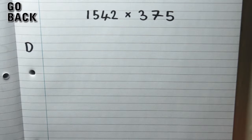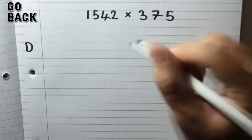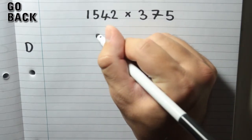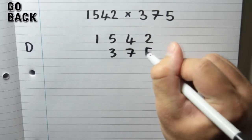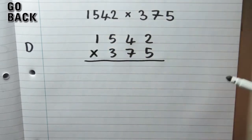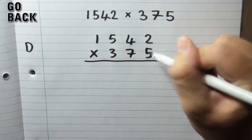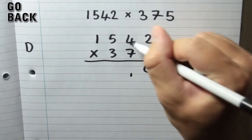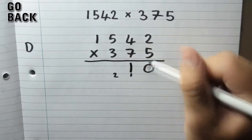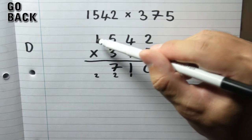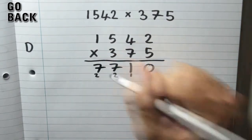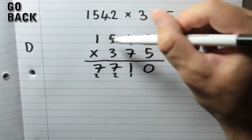Part D is long multiplication again, but this time you've got 4 digits in one number and 3 digits in the other. I'll use the column method. So I'm going to put the larger number on top: 1,542 and then 375 underneath. Put our line and multiply sign in. Now I'm going to multiply all of those numbers by 5: 2 times 5 is 10; 4 times 5 is 20, plus the 1 is 21; 5 times 5 is 25, plus the 2 is 27; 1 times 5 is 5, add the 2 is 7. So that's 1,542 times 5.